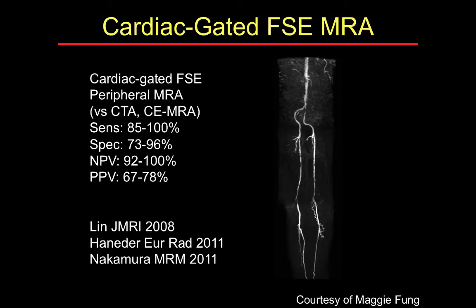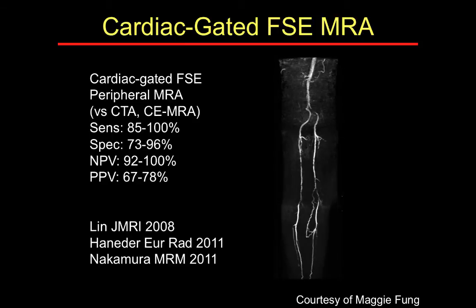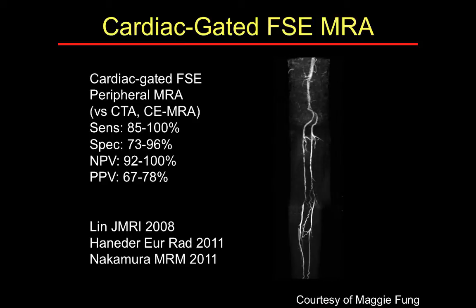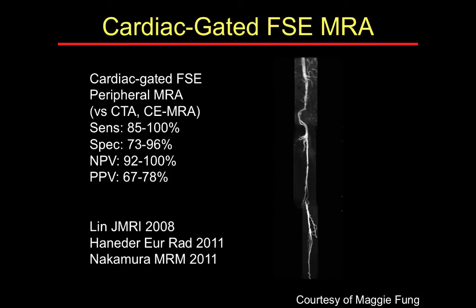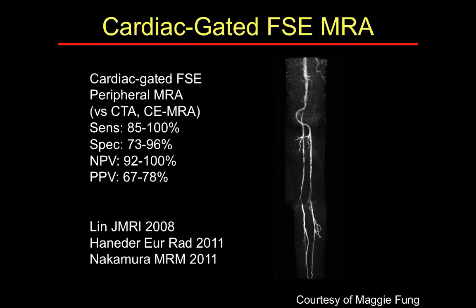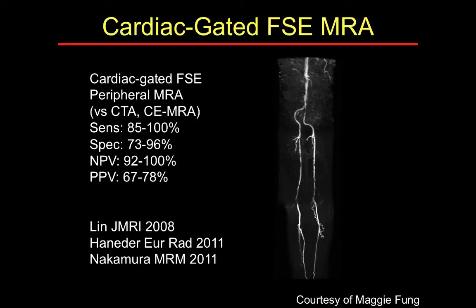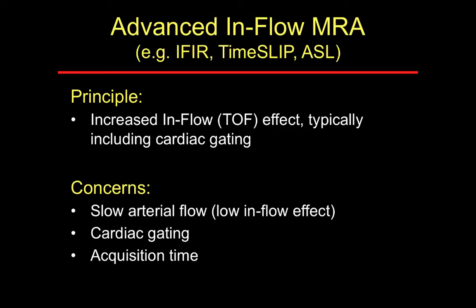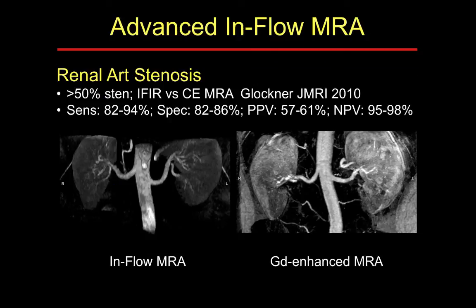Studies have found fairly reasonable sensitivities and specificities for cardiac-gated fast spin echo, though it is a flow-based technique with concerns similar to time-of-flight, particularly in terms of specificity. Another technique for non-contrast imaging is advanced inflow MRA — again known by various vendor-specific terms — essentially an improved time-of-flight where the inflow effect is augmented using techniques including cardiac gating. Jim Glockner in 2010 found a fairly reasonable experience using advanced inflow MRA compared to contrast-enhanced MRA for renal imaging.